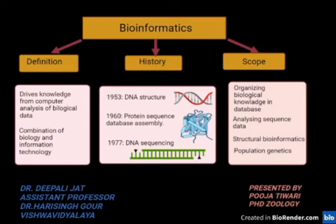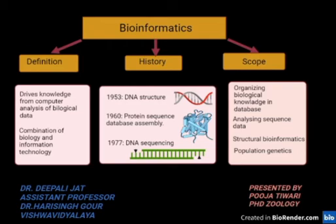Next are the components of bioinformatics. There are mainly three components. The first one is creation of databases — it involves the organizing, storing and management of biological data sets. Databases are accessible and allow submission of new entries, including protein sequences and data banks for molecular structures. The second is development of algorithms and statistics — it involves the development of tools and methods to determine the relationship among members of labs, and comparison of protein sequences with already existing protein sequences.